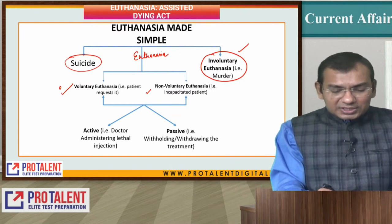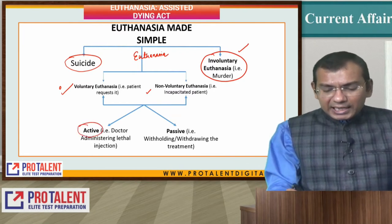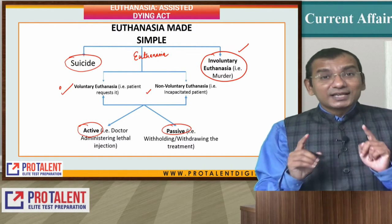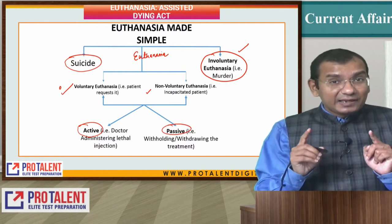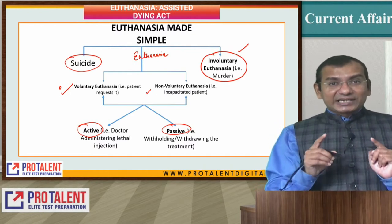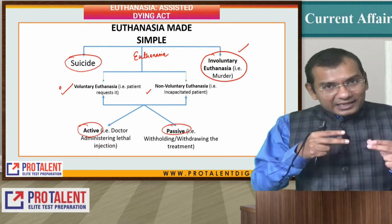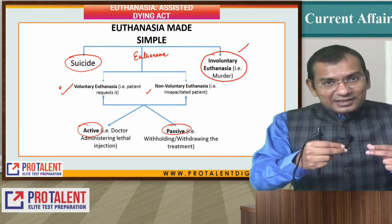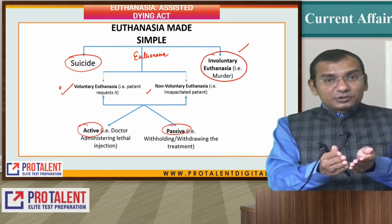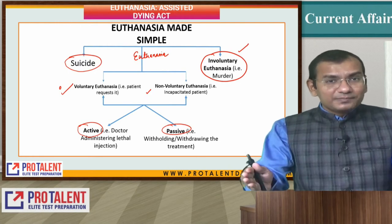Active euthanasia and passive euthanasia — active euthanasia is like giving medication, and passive euthanasia is withholding or withdrawing the life support system.